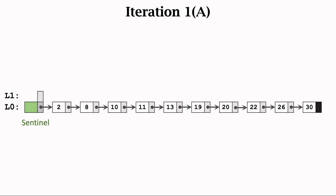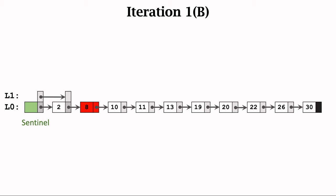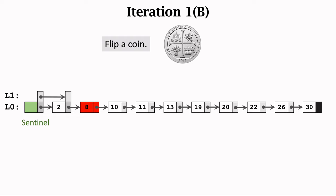Skip list is a randomized data structure. Whether to grow a node's height is a random decision. Let's begin with the first node, marked in red. Flip a coin — it happens to be heads, so the red node grows. Let the Sentinel's L1 pointer point to the red node. The next node in L0 is 8, marked in red. Flip a coin — it happens to be tails, so the height does not grow. The L1 layer skips the red node.